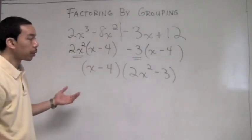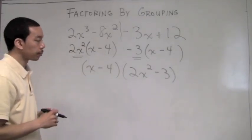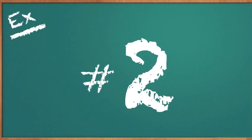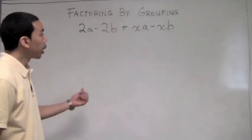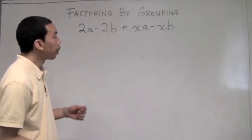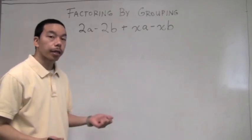Now we factor by grouping. Let's try another example. We have 2a minus 2b plus xa minus xb.